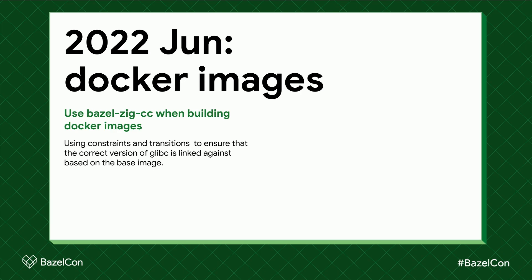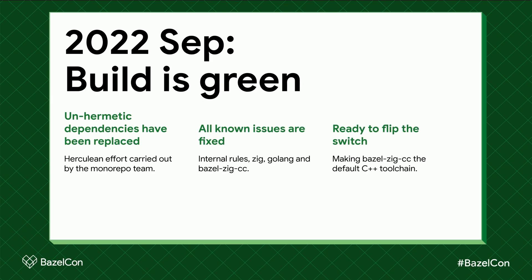In June we did something similar for Docker images built with Bazel. We defined transitions and constraints to ensure that the correct version of glibc is linked based on the base image. This gives us more confidence in the images we build, removing a whole class of errors and offloading responsibility from downstream systems — Bazel now has all the information to build the final artifact. When we were considering introducing the hermetic toolchain, we didn't even consider these specific use cases, and they were very nice to discover because we weren't going for them — they just fell out from the combination of things.